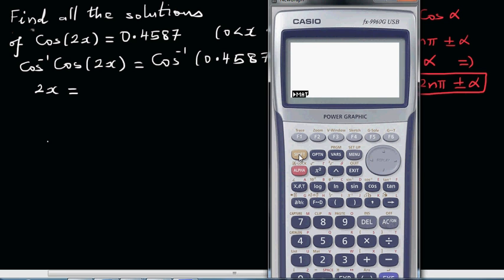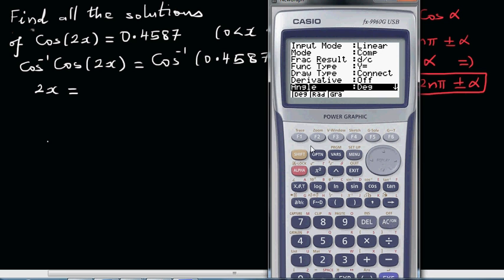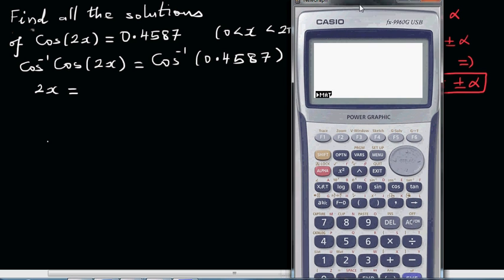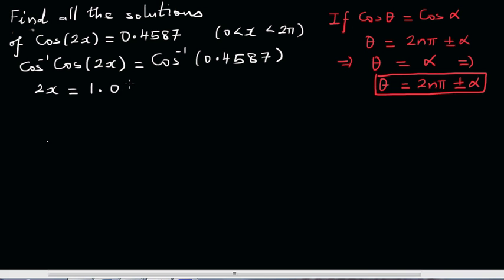First I need to check my setting whether it's in radians or degrees. It's in degrees, so I'll change this into radians. I can say shift cos bracket, cos inverse of 0.4587, close the bracket equal. This is 1.0942, or 1.0943 if you want to round it to 4 decimal places.